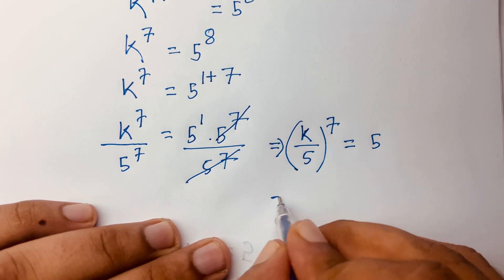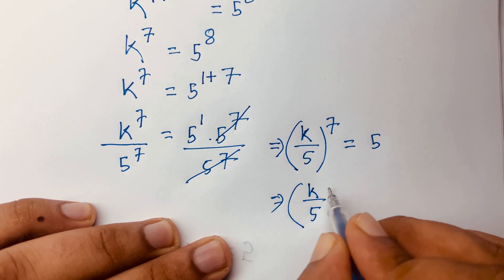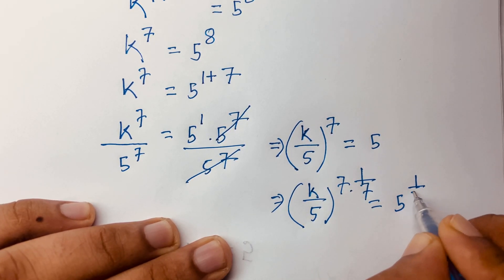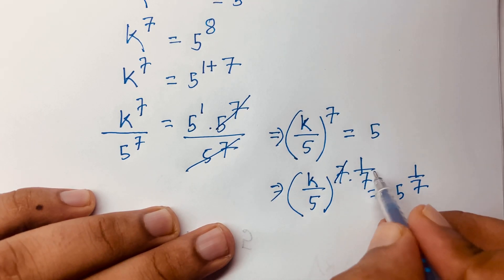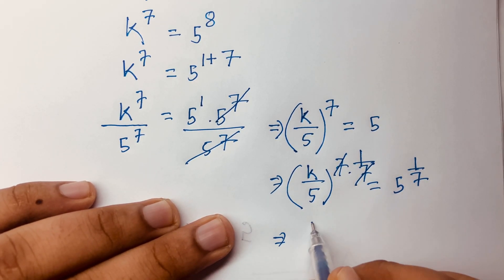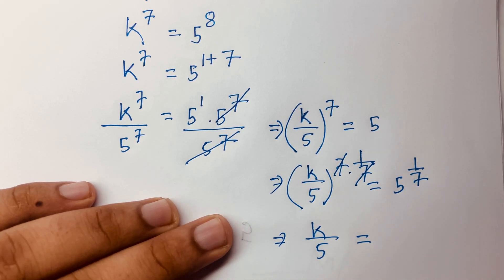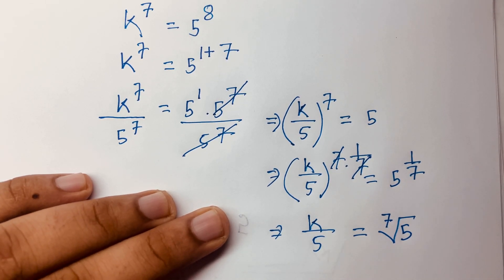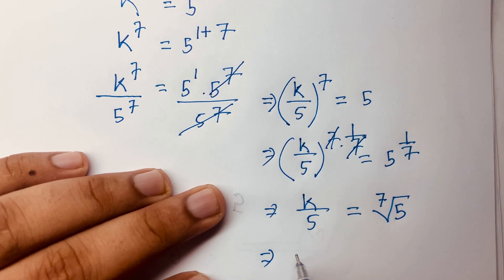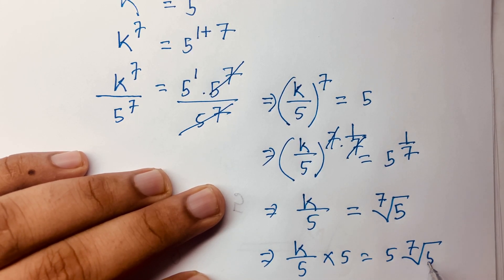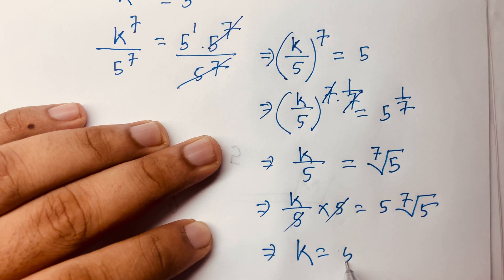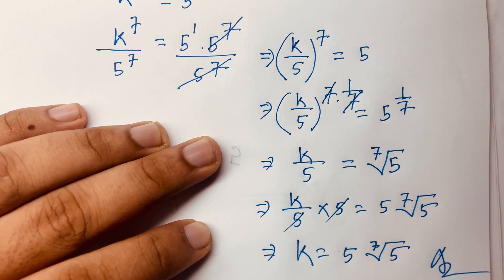(k/5) to the power 7 equals 5. I apply both sides to the power 1 over 7, so the 7s cancel. We find k/5 = 5 to the power 1/7, which is the 7th root of 5. Multiplying both sides by 5, we find the value of k = 5 · ⁷√5. This is our final answer.